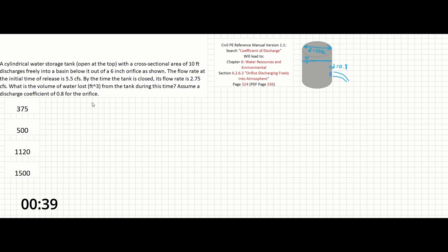Since this problem mentions a discharge coefficient, this should make us think of some form of the orifice equation. There is a section in the reference manual that deals directly with orifices discharging freely into the atmosphere, so let's start there. We can see that the following equation is provided in the manual: Q equals C_D times A, the cross-sectional area of the flow leaving the orifice, times the square root of 2GH.